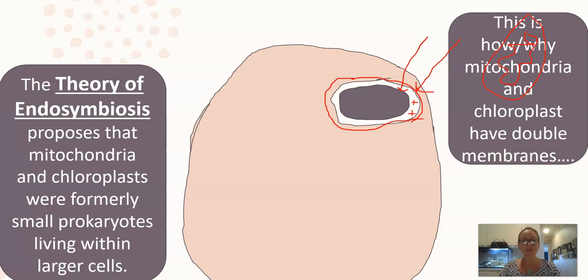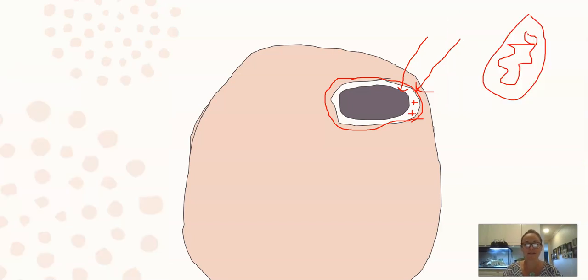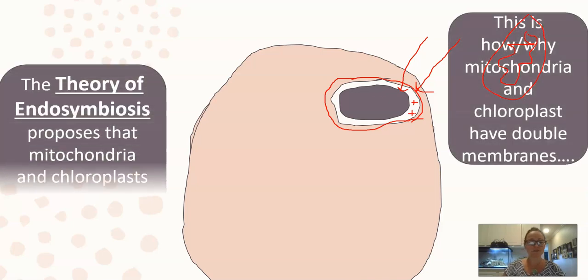So when we look at this theory, it's a theory because it's incredibly well supported, of endosymbiosis. It proposes that mitochondria and chloroplasts were formally, they're not still, but formally small prokaryotic cells living within larger ones. So if we think about the evidence for this, like how do we know this?